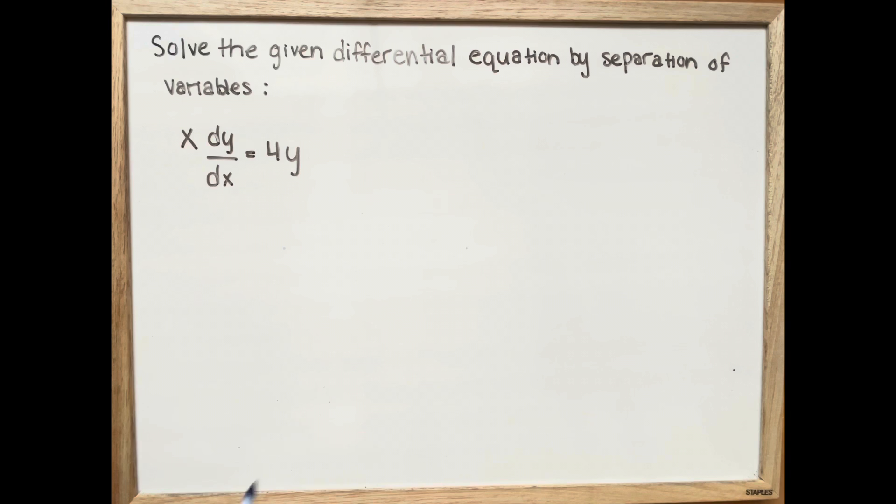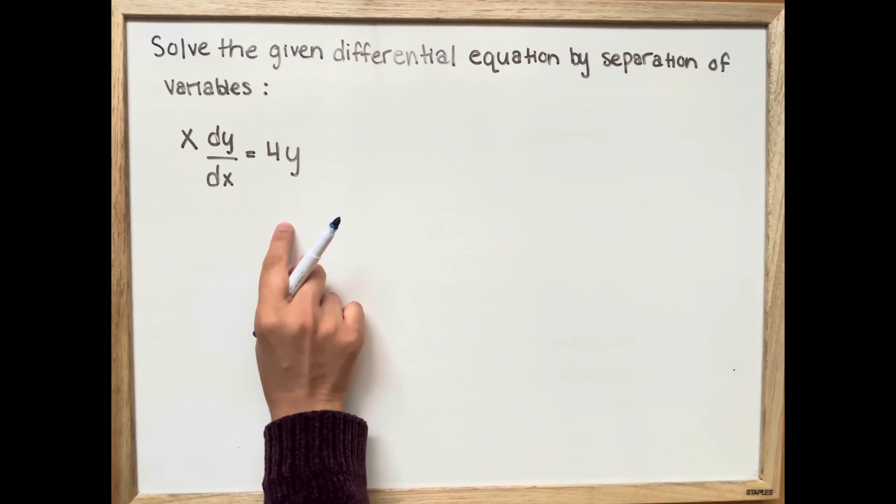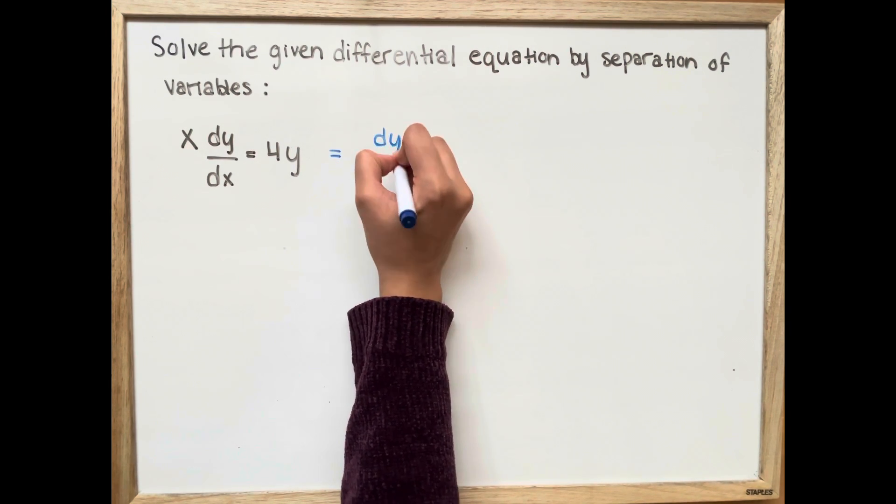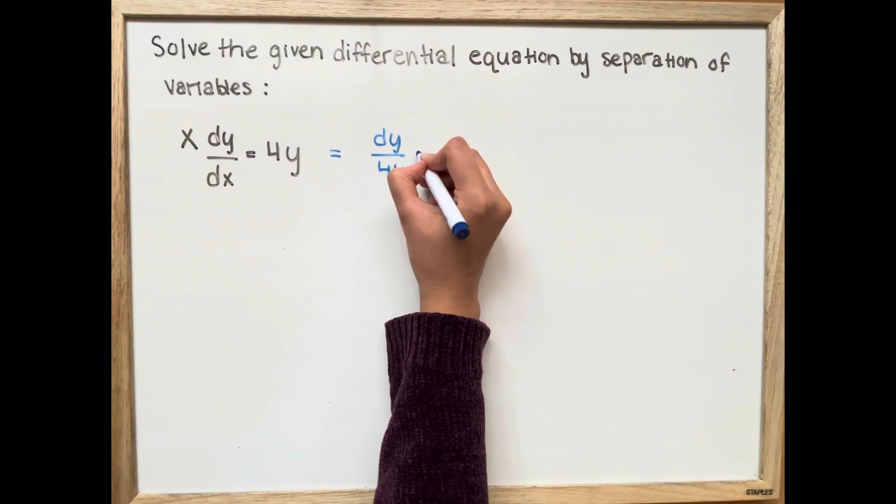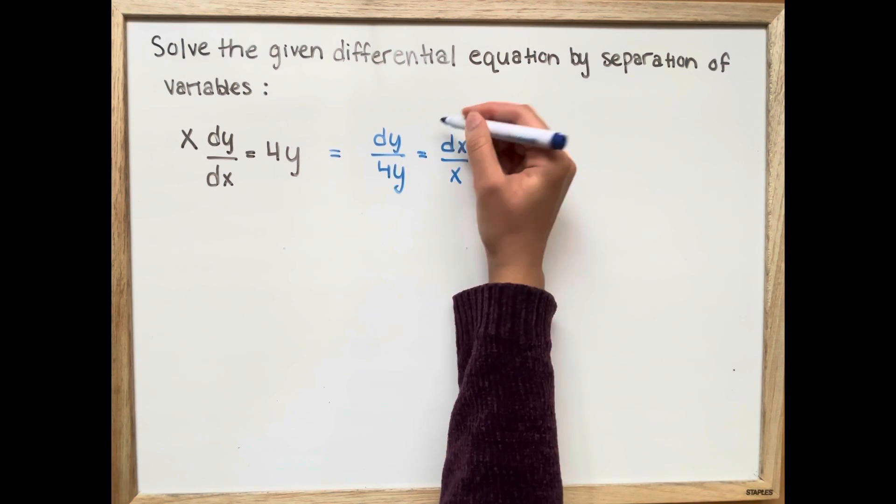So our first step is going to be bringing everything, all the y's, to the left side and the x's to the right side. So this is going to equal dy over 4y is equal to dx over x.